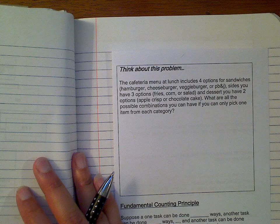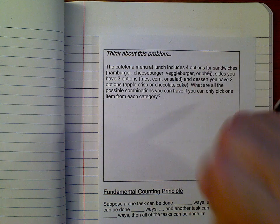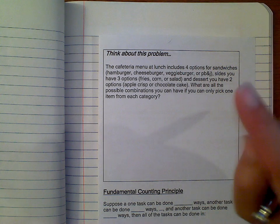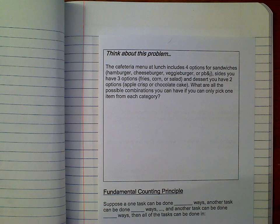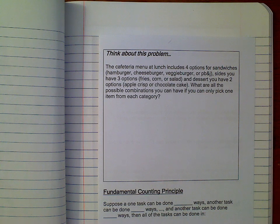Here's a problem to think about — pause and try it on your own, then hit play again. A cafeteria menu at lunch includes four options for sandwiches: hamburger, cheeseburger, veggie burger, or PB&J. For sides you have three options: fries, corn, or salad. For dessert you have two options: apple crisp or chocolate cake. What are all the possible combinations if you can only pick one item from each category?